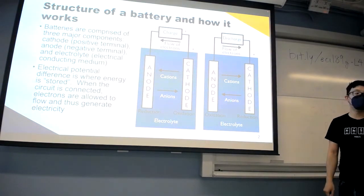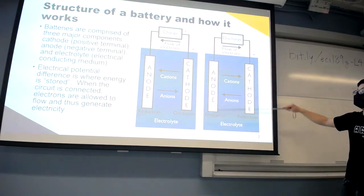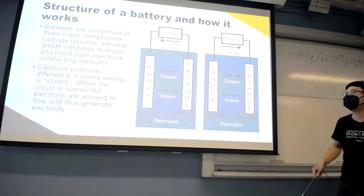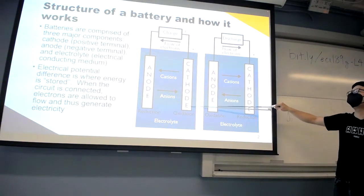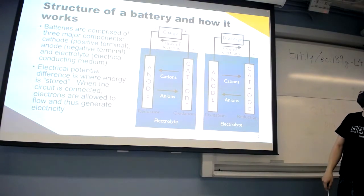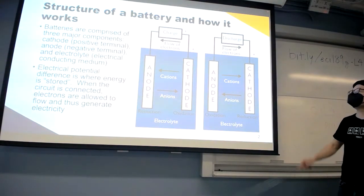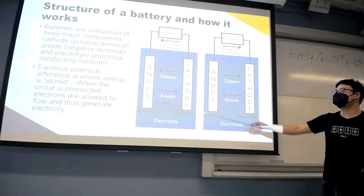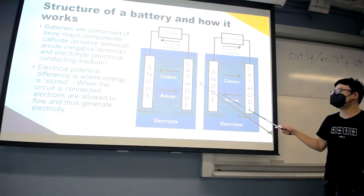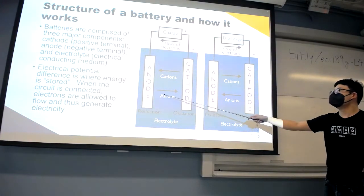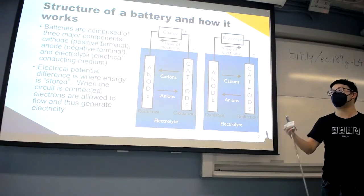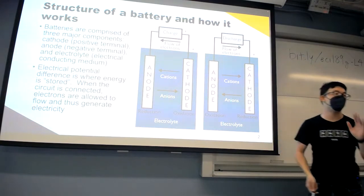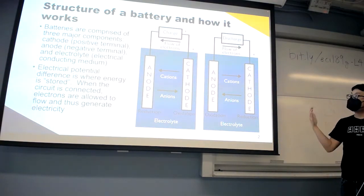There are three major components for a battery: the cathode, the anode, and the electrolyte. The cathode is the positive terminal — you can think of the 't' as like a plus sign to remember it. The anode is the negative terminal. The electrolyte is the medium through which the ions of your cathode or anode are exchanged.